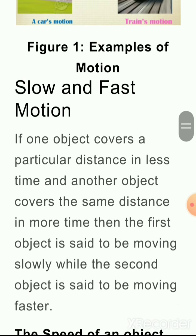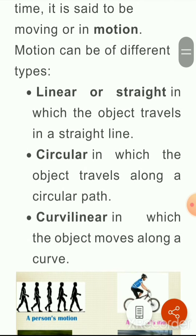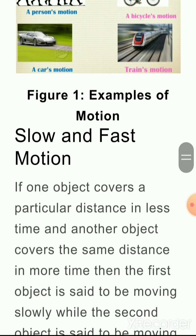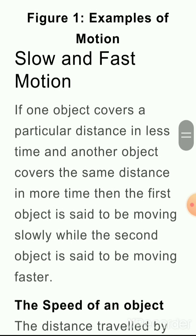Next topic: Slow and Fast motion. Motion भी slow and fast होता है। If an object covers a particular distance in less time and another object covers the same distance in more time, then the first object is said to be moving faster while the second is moving slowly. अगर कोई car उस distance को half hour में complete करती है, और दूसरी car उसी distance को one hour में complete करती है, तो हम कह सकते हैं कि दूसरी object पहली से धीमी चल रही है।